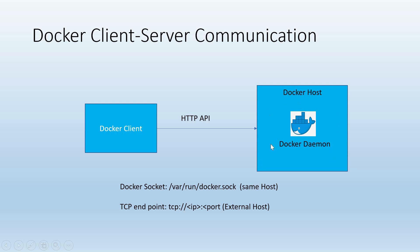When we install Docker and run the Docker daemon, by default the Docker daemon listens on a Unix socket, so it accepts only connections from that socket. If the Docker client is running on the same machine and executes any command like docker build, docker run, etc., those commands will be sent to the Docker daemon via this Unix socket. But if the client is not on the same machine as the Docker host, it does not have access to this socket, so it is not possible to execute commands from outside by default. To communicate with the Docker daemon from outside the host machine, we need to enable a TCP socket to accept connections from outside.